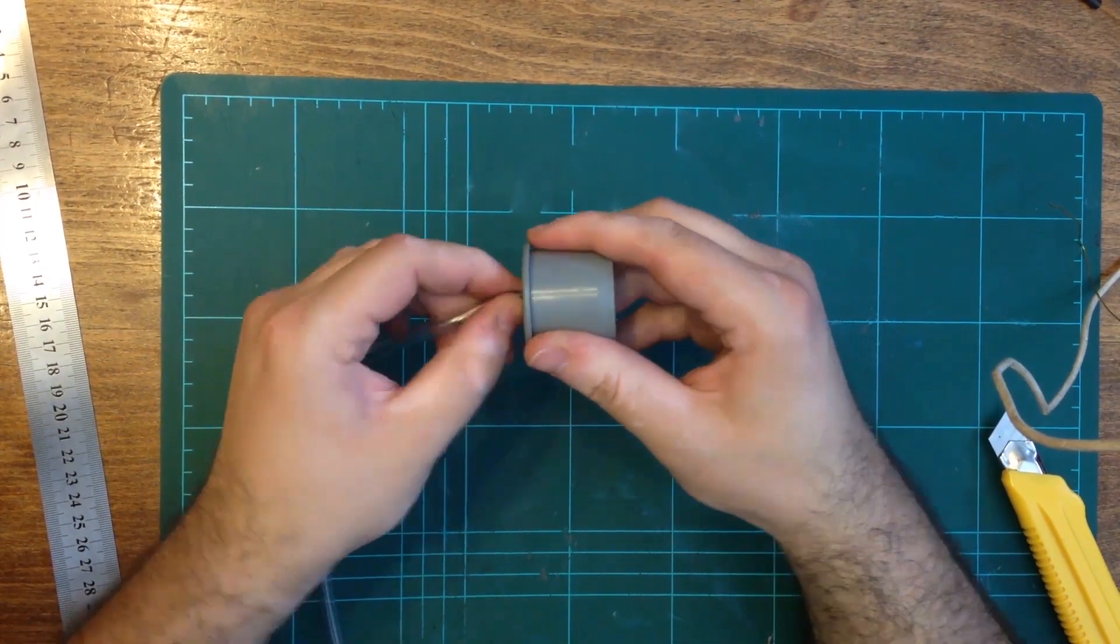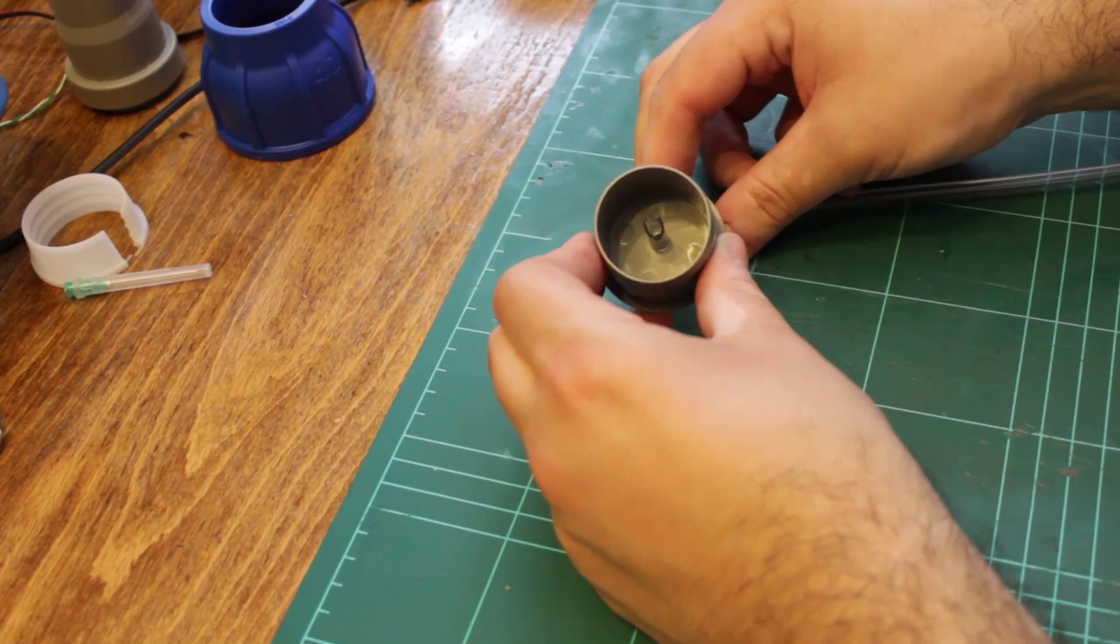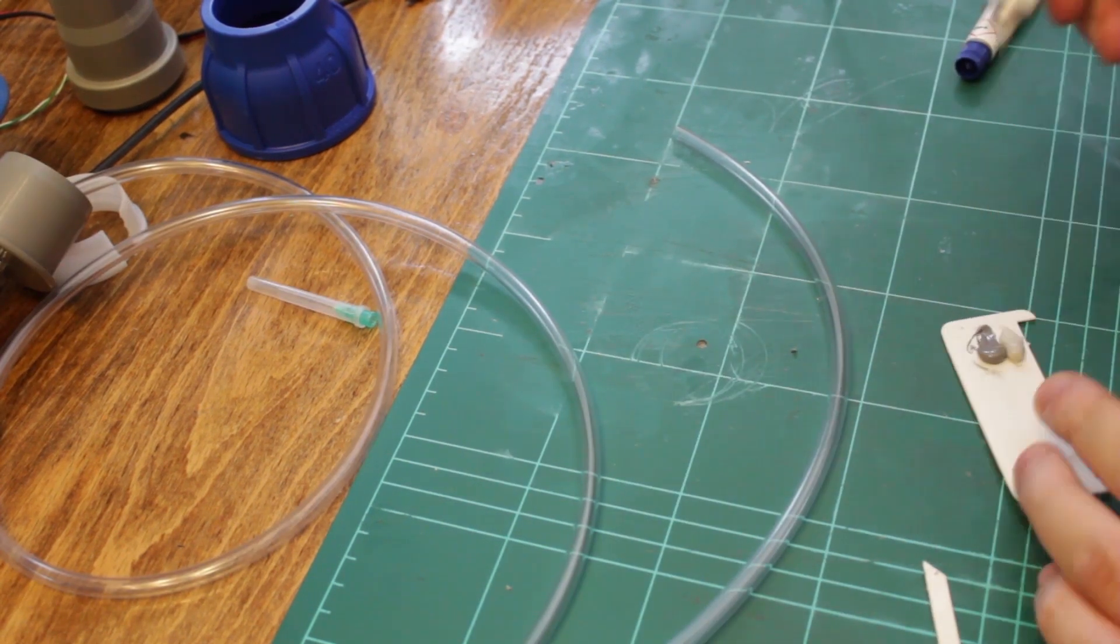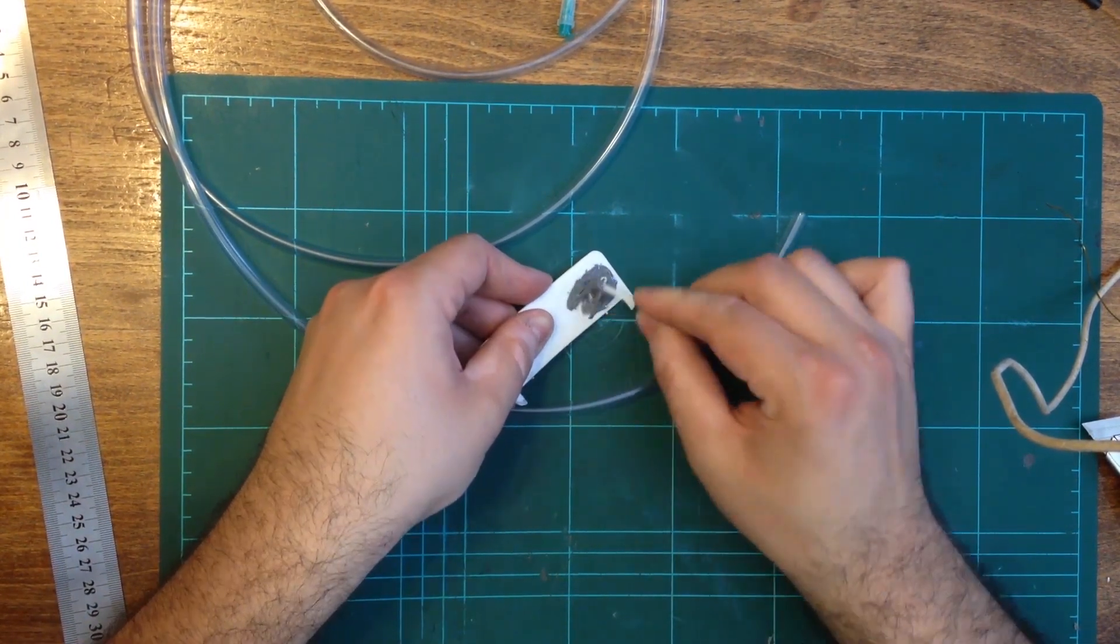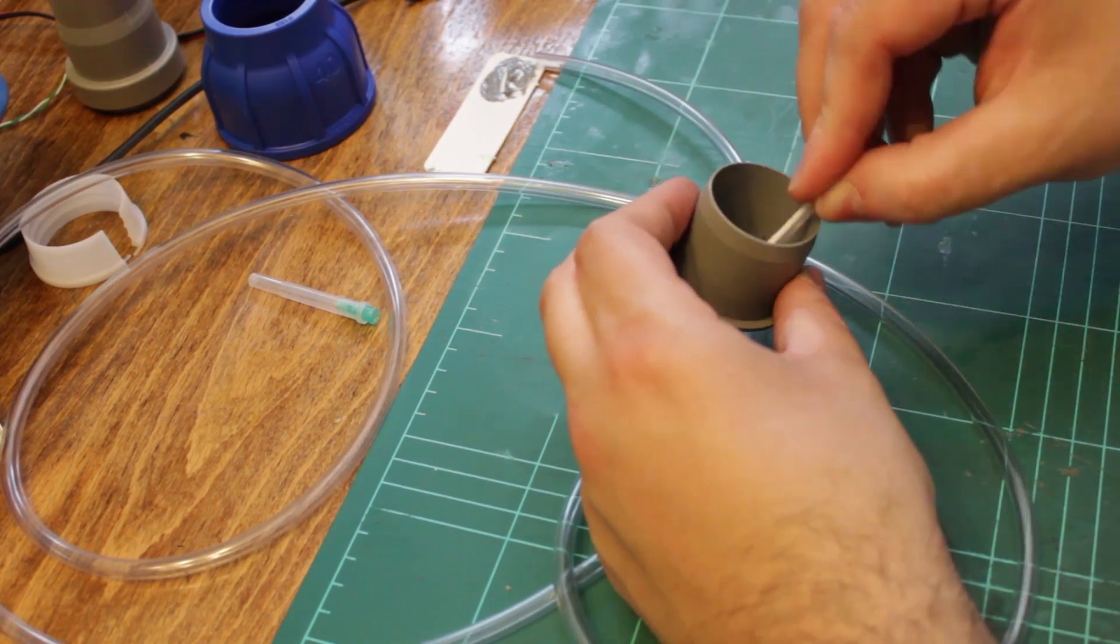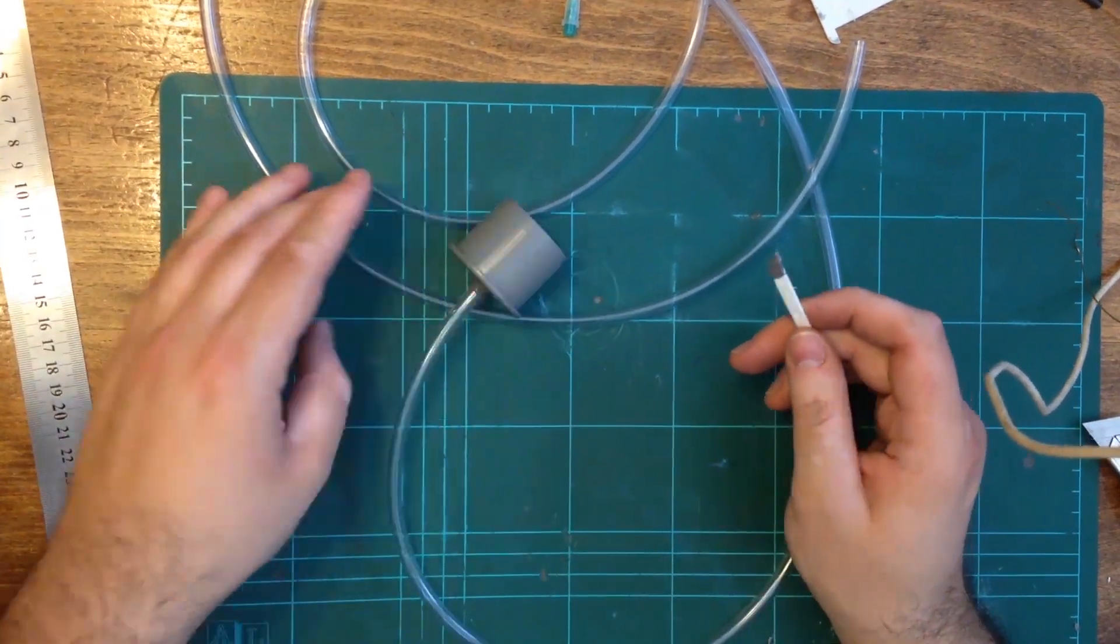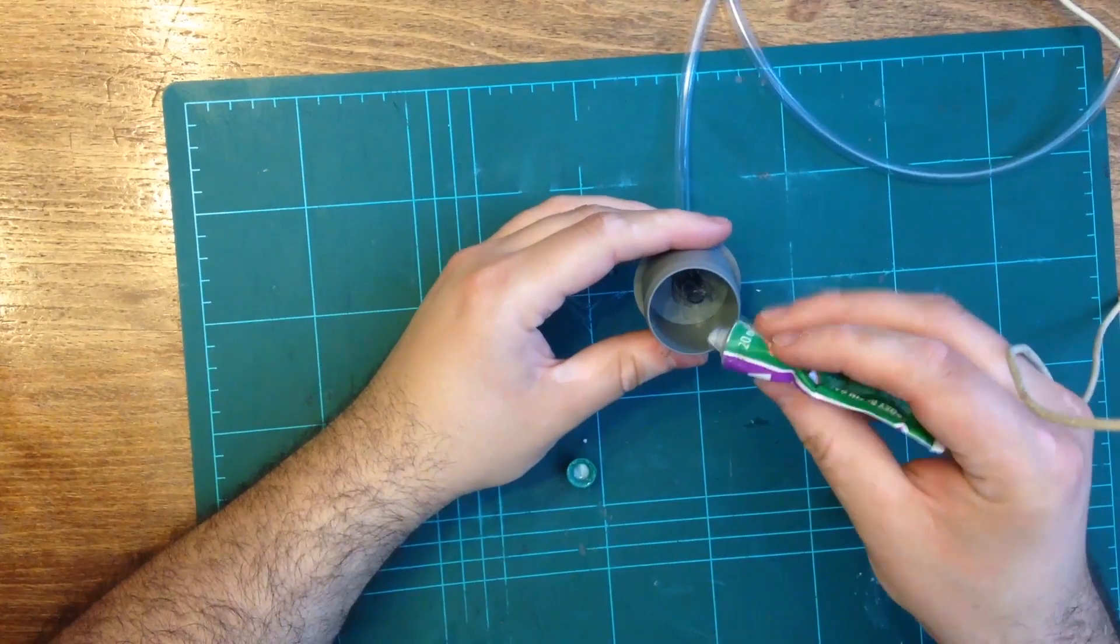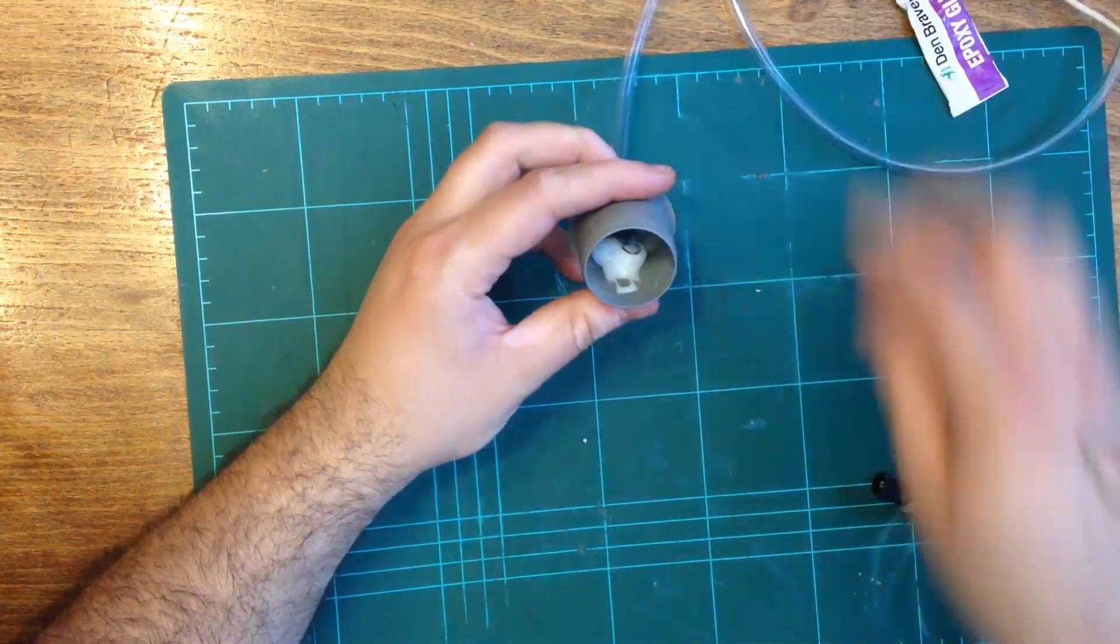With the hole drilled, I inserted the tubing and set it with some 10 minute epoxy. With the tube quickly set, I proceeded to fill the area surrounding the tubing with more liquid plastic epoxy which sets overnight.